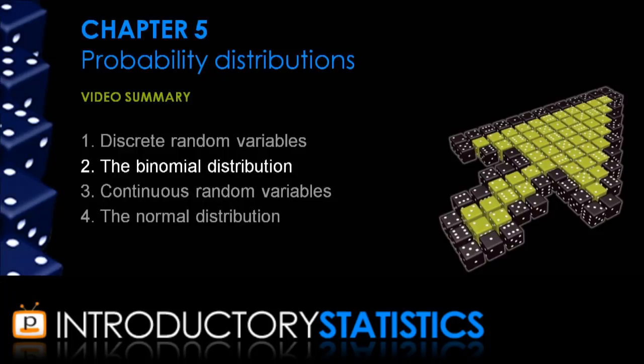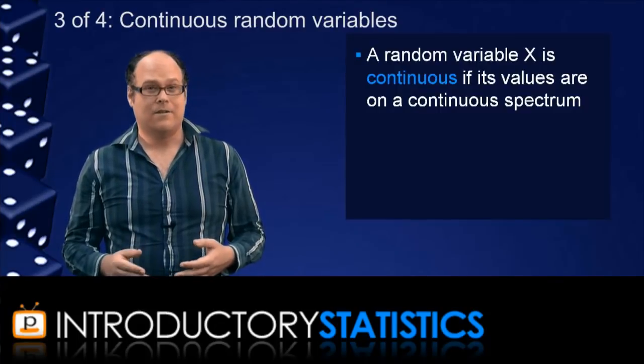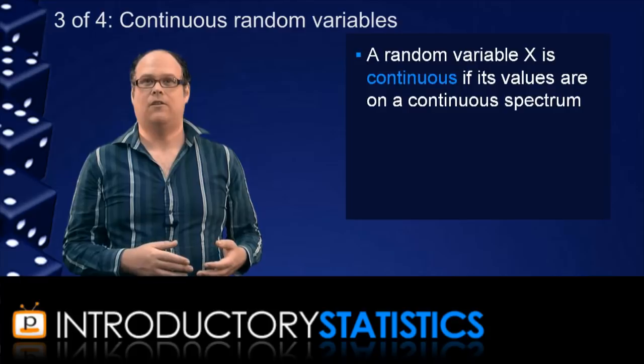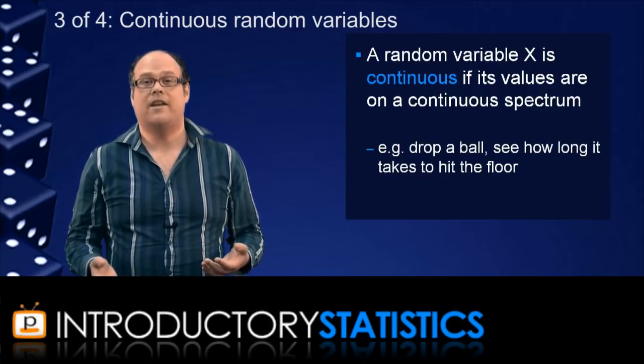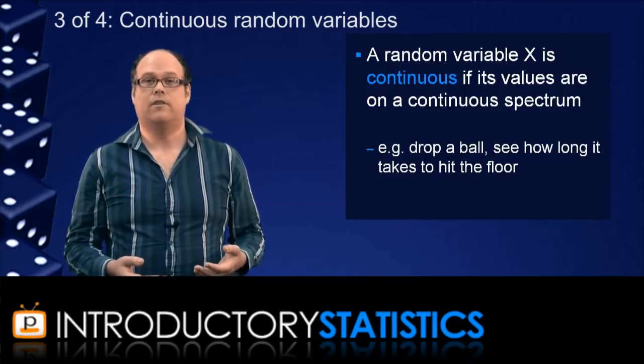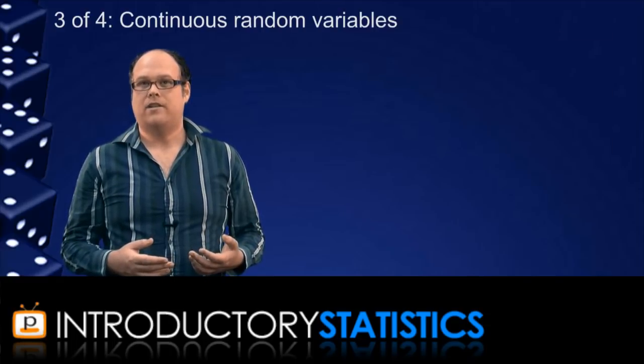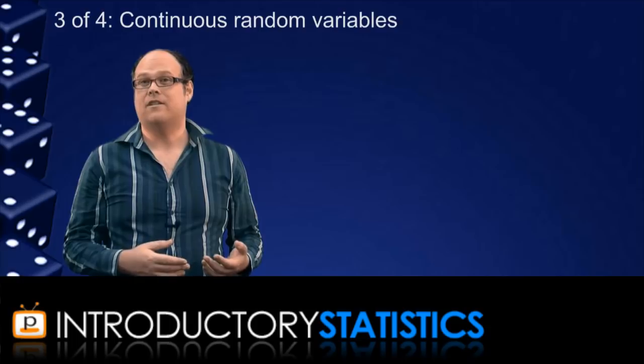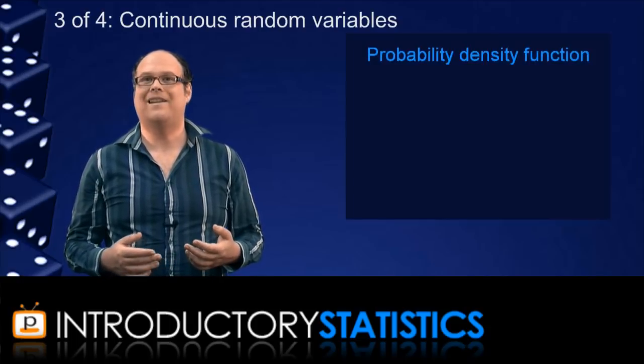The binomial distribution is very important for discrete random variables but actually a lot of interesting random variables are continuous. So let's look at that now. A random variable is continuous if its values exist along a continuous spectrum. For example, if your variable is measuring the length of time it takes for a ball to drop to the floor, that time taken could, for example, be anywhere between 1 second and 2 seconds. The way we assign probabilities for continuous random variables is different to how we do it for discrete random variables. We do it through a probability density function.